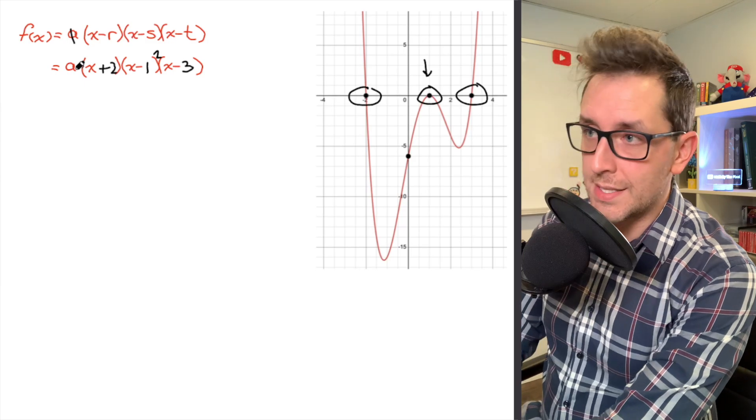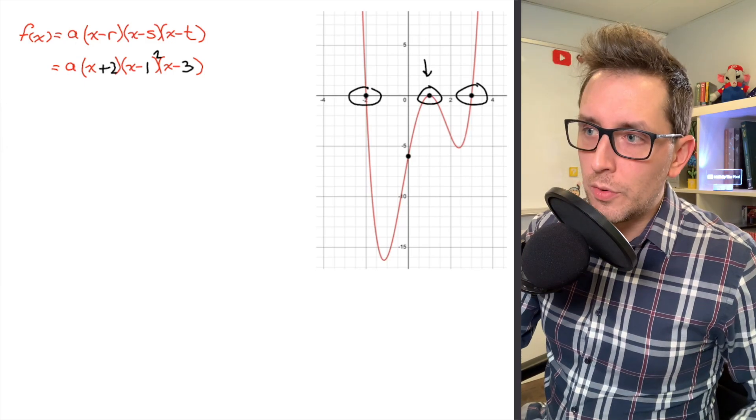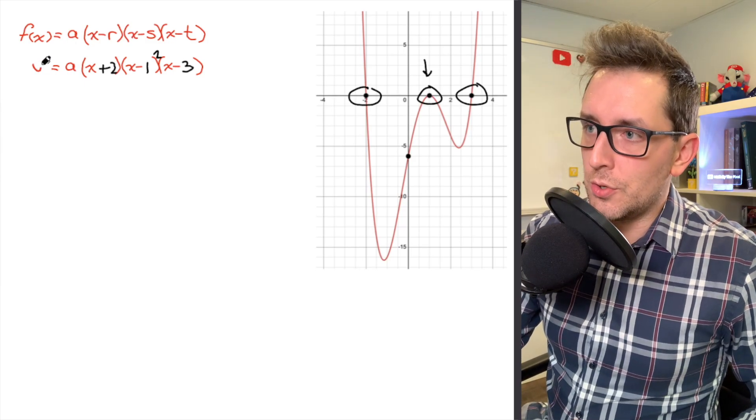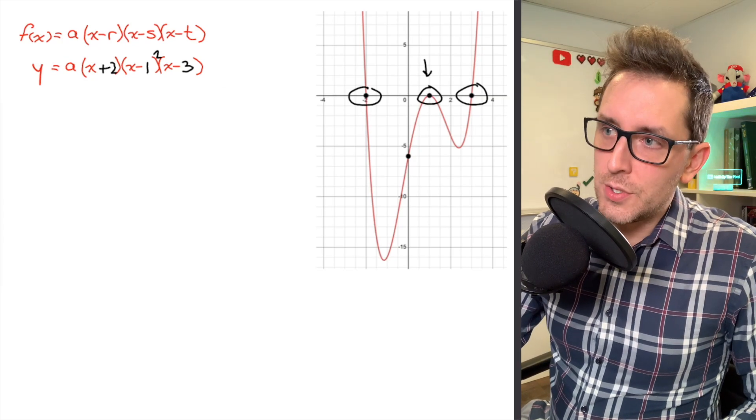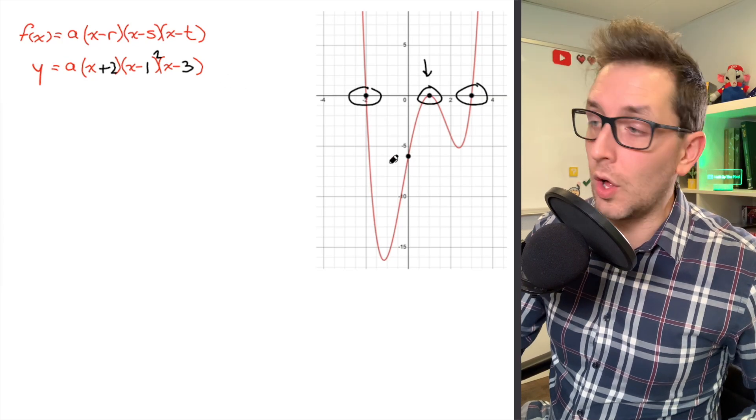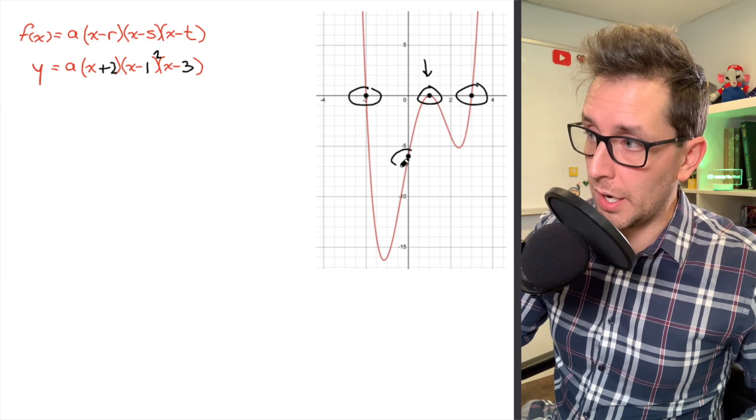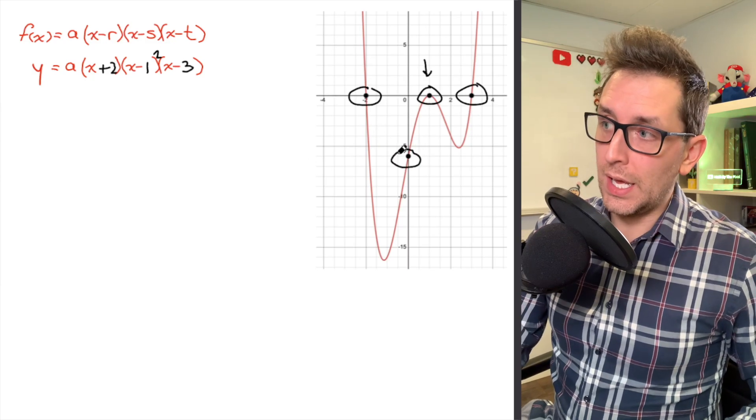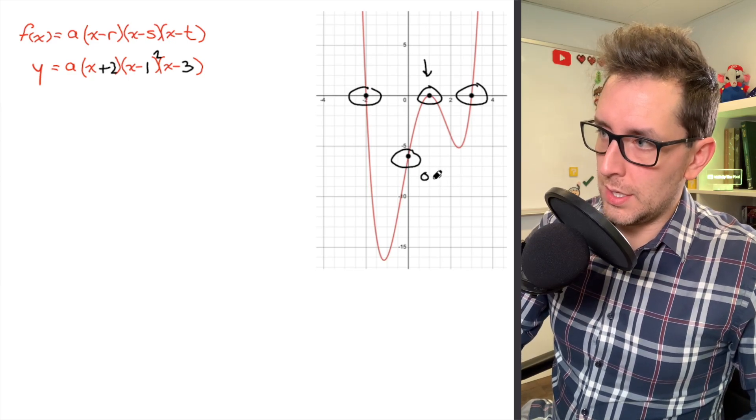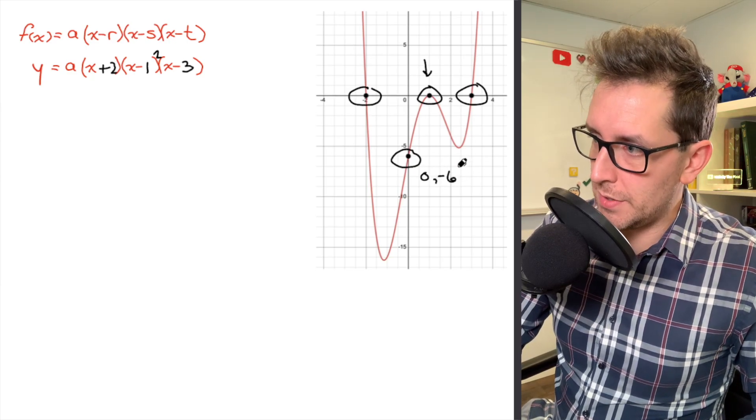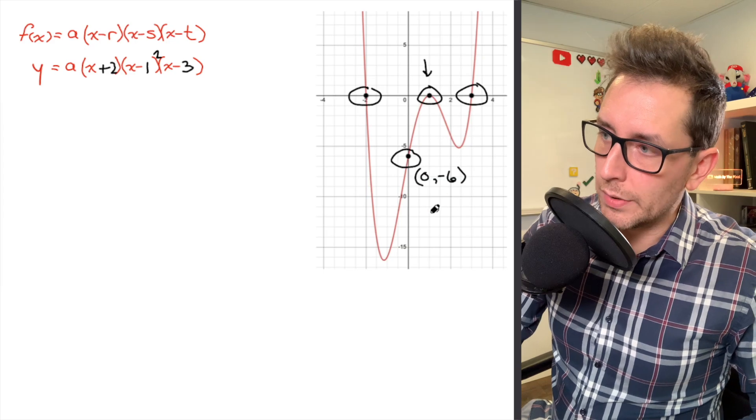So we're not going to assume that a is equal to 1. What we're going to do is we're going to use our understanding of functions to determine the value of that a parameter. And we're going to do that by substituting in a point that happens to fall on the graph of our polynomial. I'm going to pick on the y-intercept because that point is very clearly located at the coordinates of 0, negative 6.